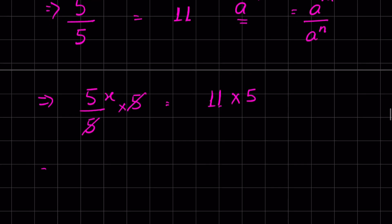This 5 and this 5 gets cancelled. So 5 raised to the power x is equal to 55.